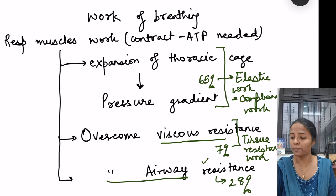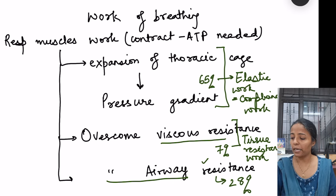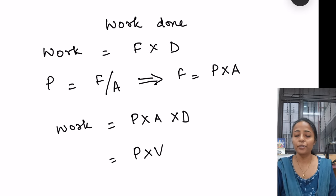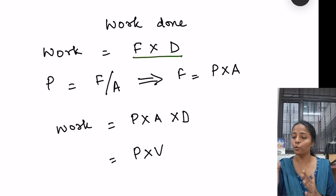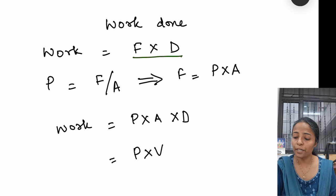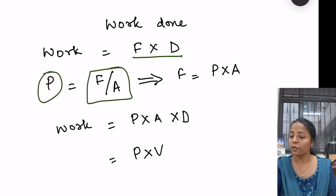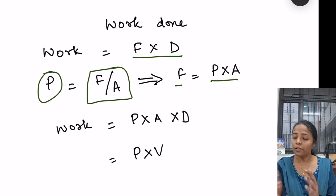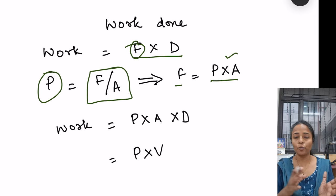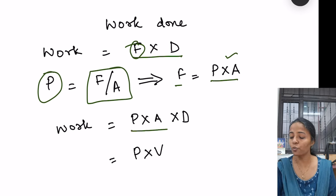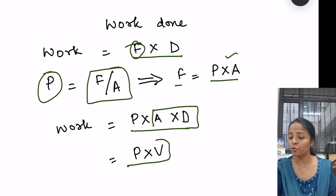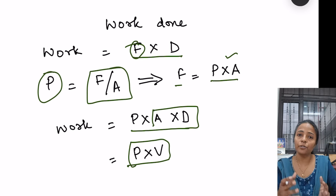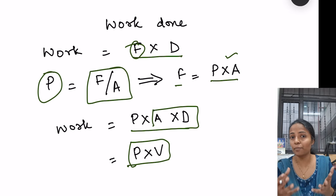Airway resistance work is approximately 28% of the total work. Now, how to calculate this work of breathing? Work done is equal to force into distance. We know pressure equals force upon area, so force equals pressure into area. Replacing force in the equation, work equals pressure into area into distance. Area into distance equals volume, so simply pressure into volume gives us the work done.